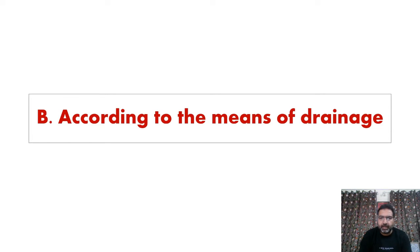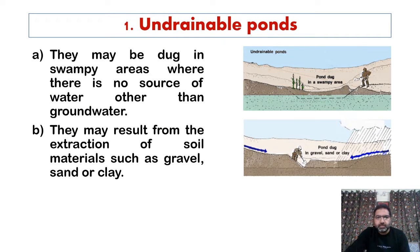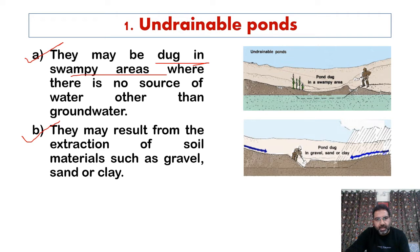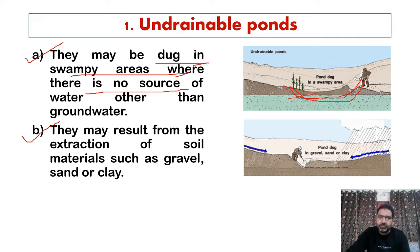The second main category of ponds is based on drainage. Some ponds are called undrainable ponds — these cannot be drained by gravity. They are generally fed by groundwater or surface runoff and their water level may vary seasonally. Such ponds fall into two groups: they may be dug in swampy areas where there is no source of water other than groundwater.